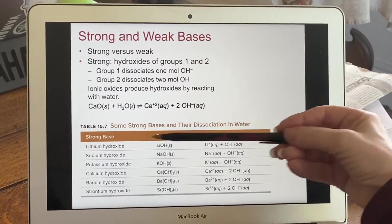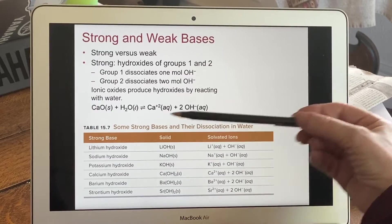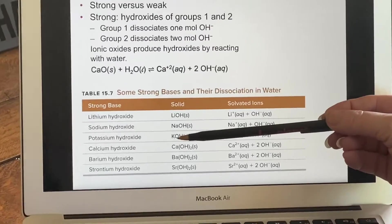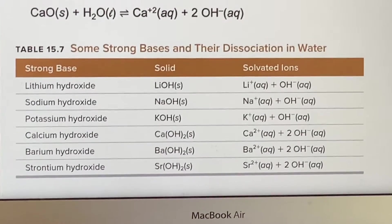If you think back to your list of what the strong bases are, you find that lithium, sodium and potassium are all in group one. Calcium, barium and strontium are all in group two on your periodic table.